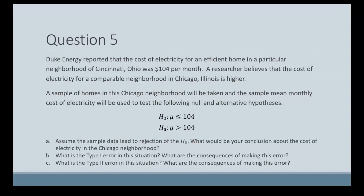A researcher believes that the cost of electricity for a comparable neighborhood in Chicago is higher. So a sample of homes in this Chicago neighborhood will be taken and the sample mean monthly cost of electricity will be used to test the following null and alternative hypotheses that we have on the screen.